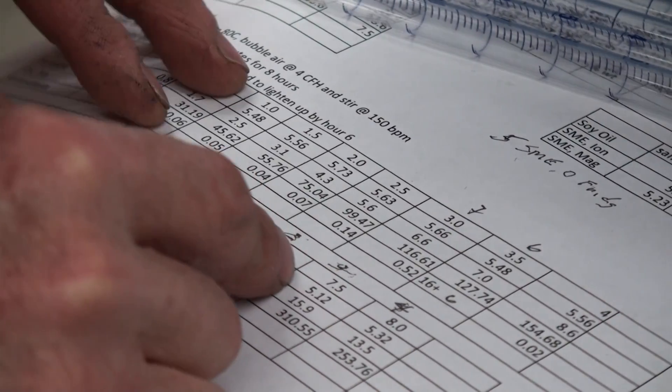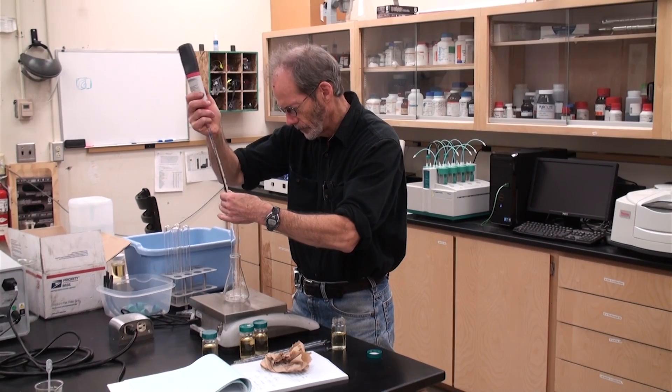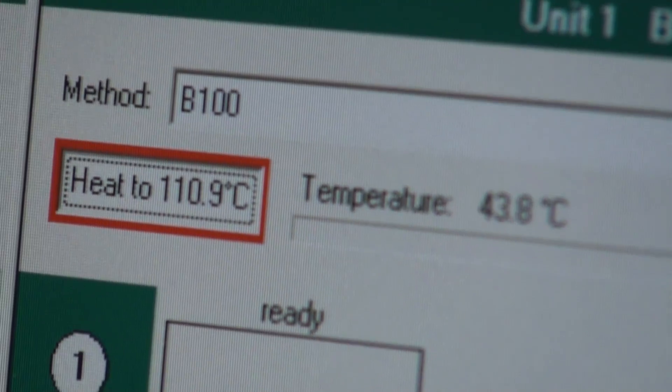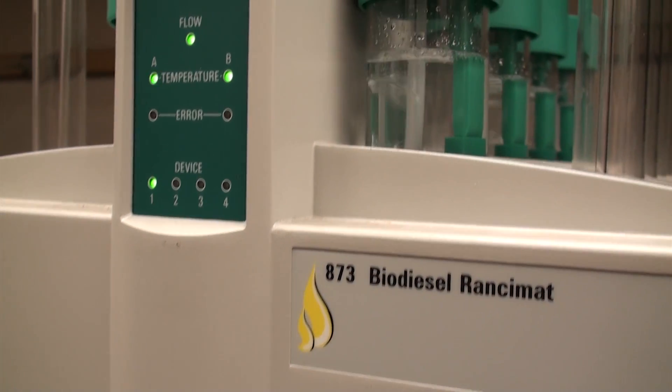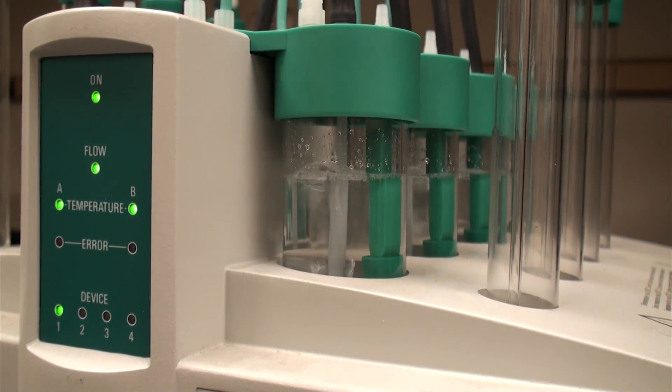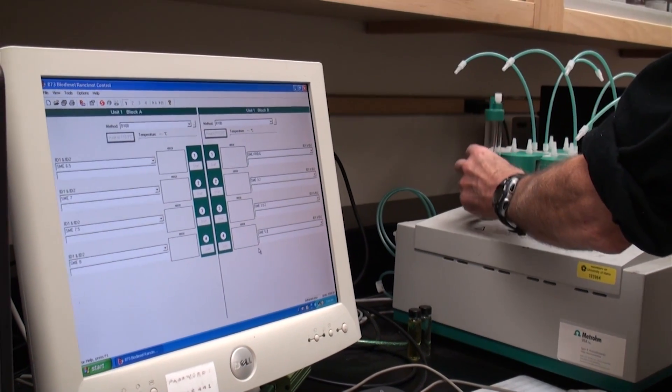We take small samples of biodiesel, about seven and a half grams, and heat it up to approximately 110 degrees C. It bubbles air through the sample, and then from there the air goes into a reaction vessel that has about 60 ml of water in it, and there's also a conductivity probe in there.